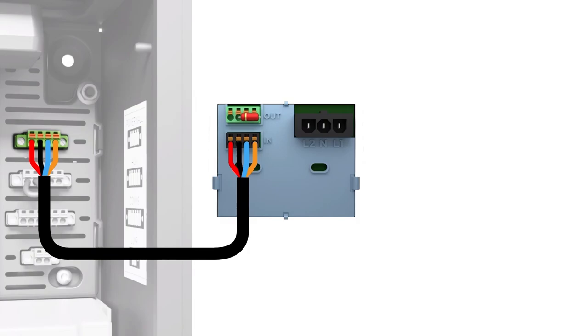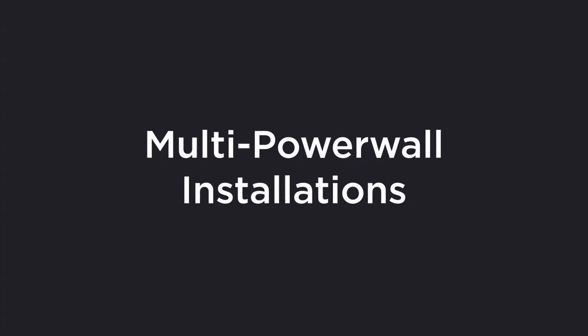For single Powerwall 2 installations, plug the green communication connector with resistor into the top left corner labeled OUT inside the wiring compartment. Make sure the connectors are fully seated since there is no locking mechanism.